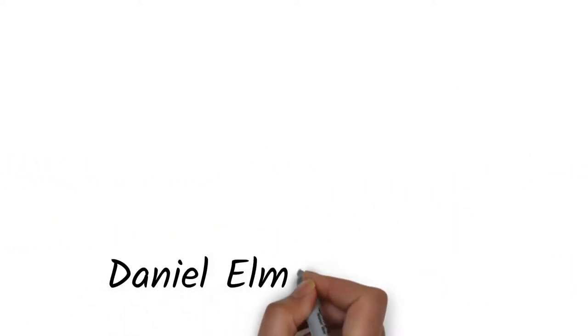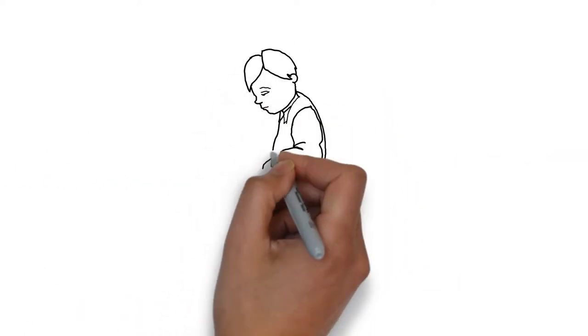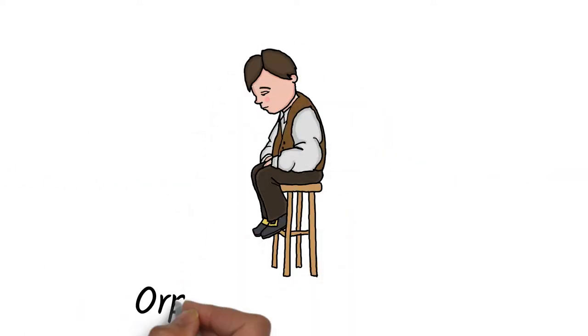This all starts with Daniel Elmer Salmon, born on July 23rd, 1850 in Mount Olive Township, New Jersey. His parents both died when he was young, making him an orphan at the age of 8, where he was then raised by his second cousin.